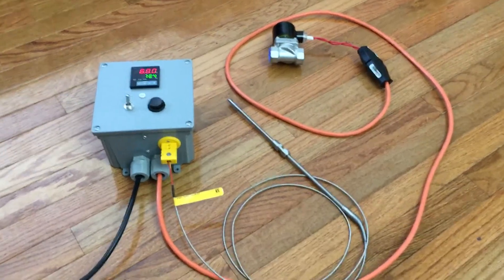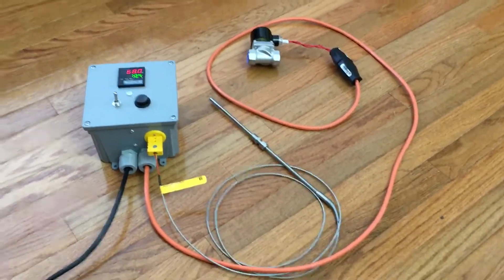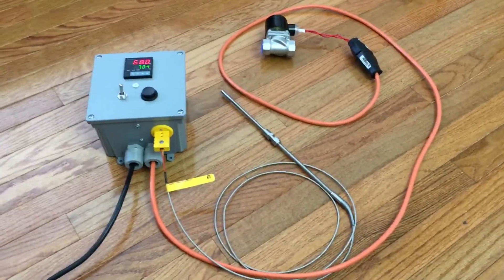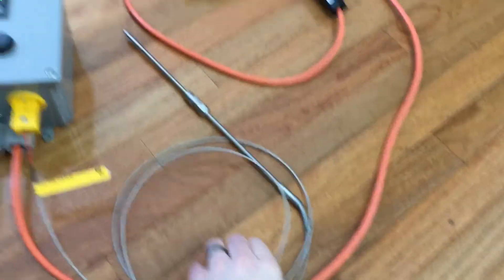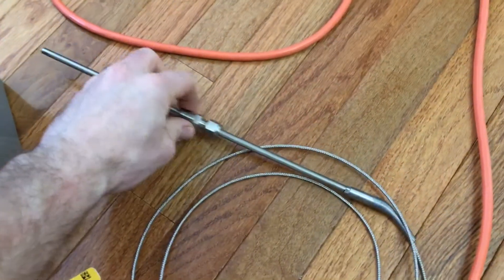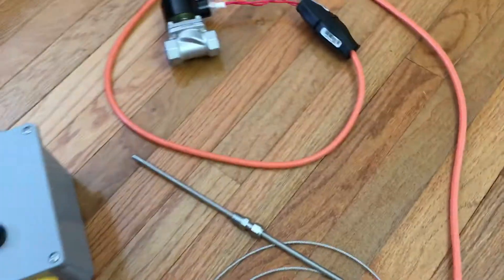I thought I'd do a quick video on version two of the sap evaporator auto draw system. We've got a temperature probe with an adjustable ferrule fitting so you can set the depth wherever you want it in your pans.